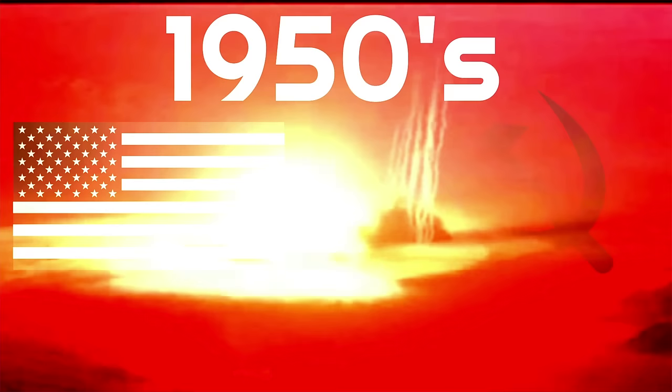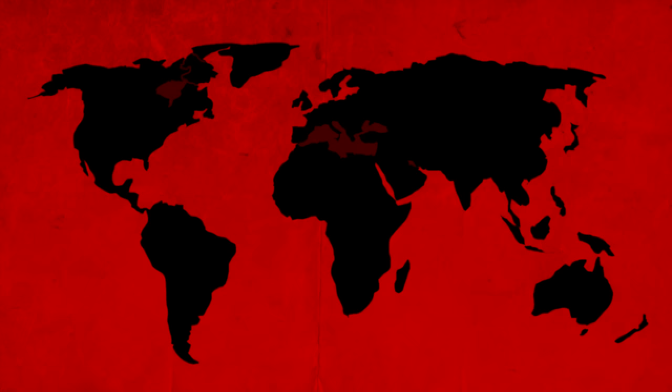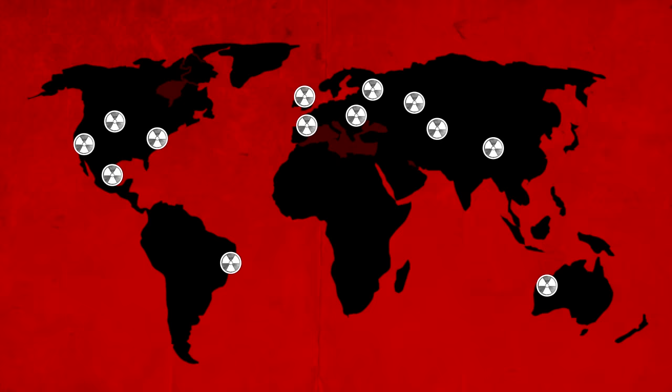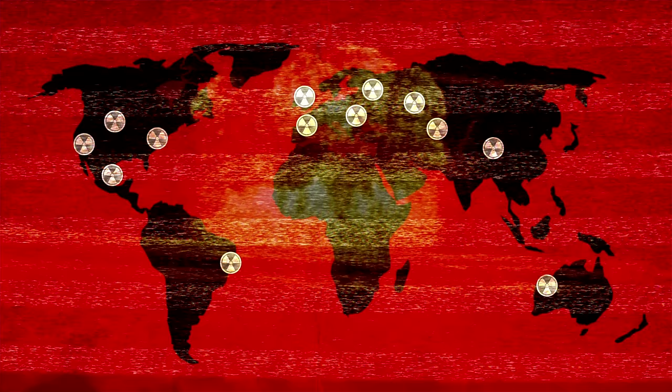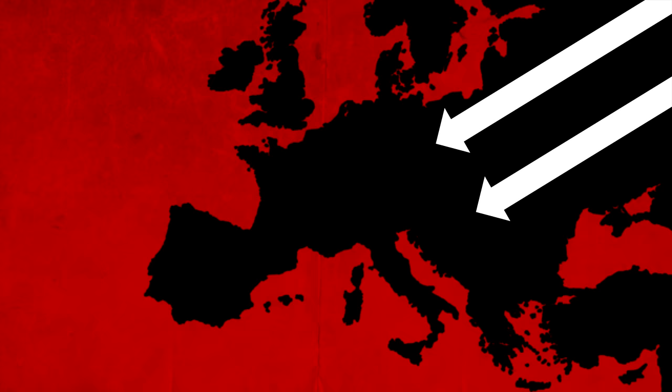But in Orwell's timeline, there is no decades-long tension of the Cold War between America and Russia. Instead, sometime in the early 1950s, World War III breaks out. Nuclear bombs were used on major cities around the world, including Colchester, but not London. All we know is Britain was nuked multiple times — this was probably around 1954. During the bombings, the Soviet Union invaded all of mainland Europe, as its army swept even into the Iberian Peninsula.